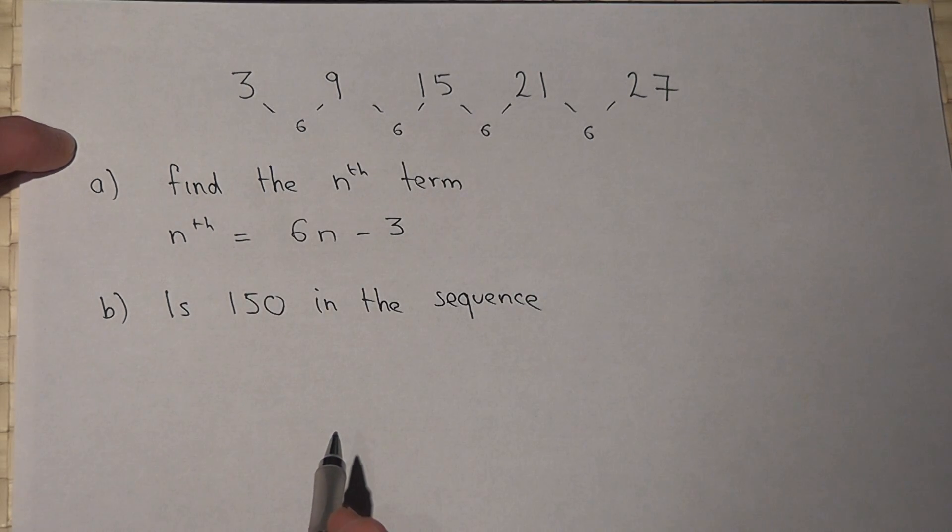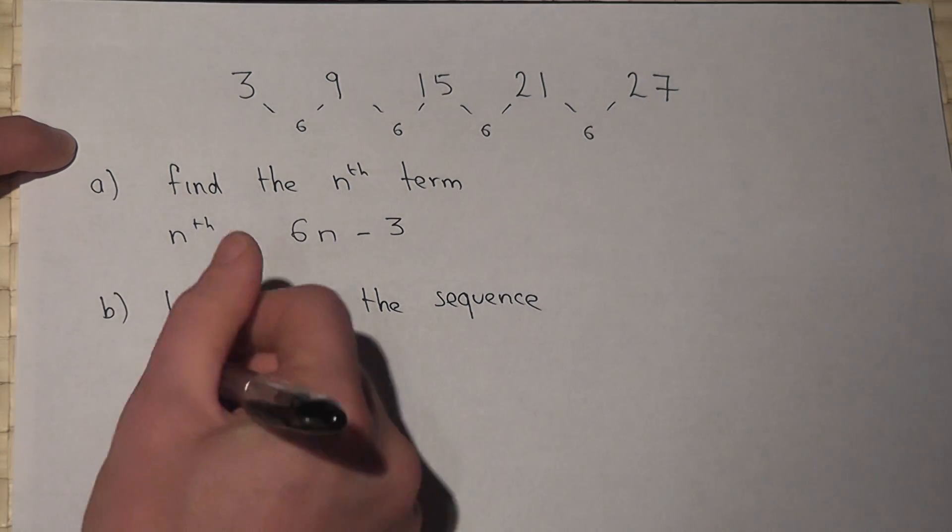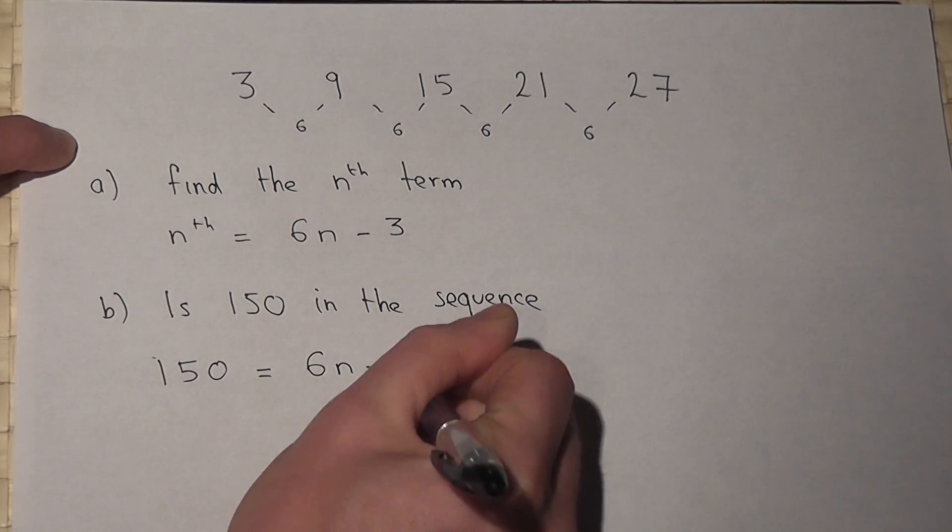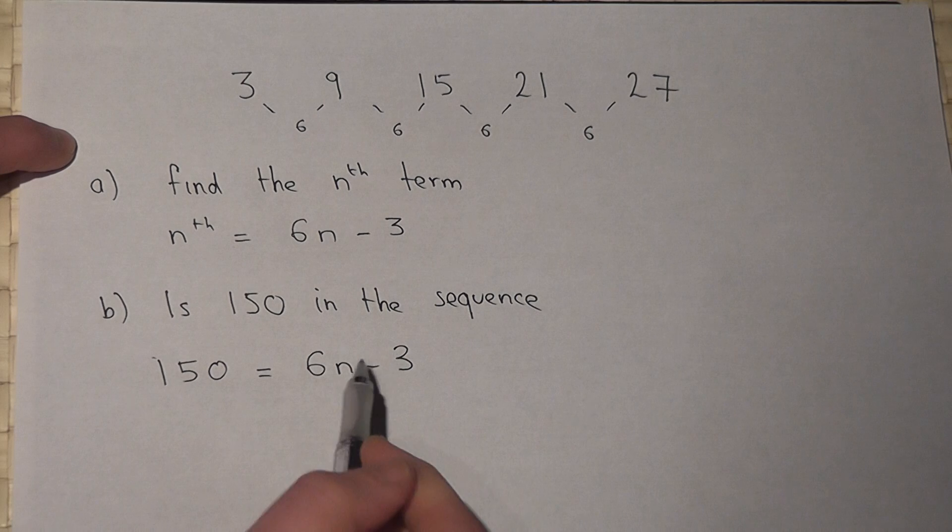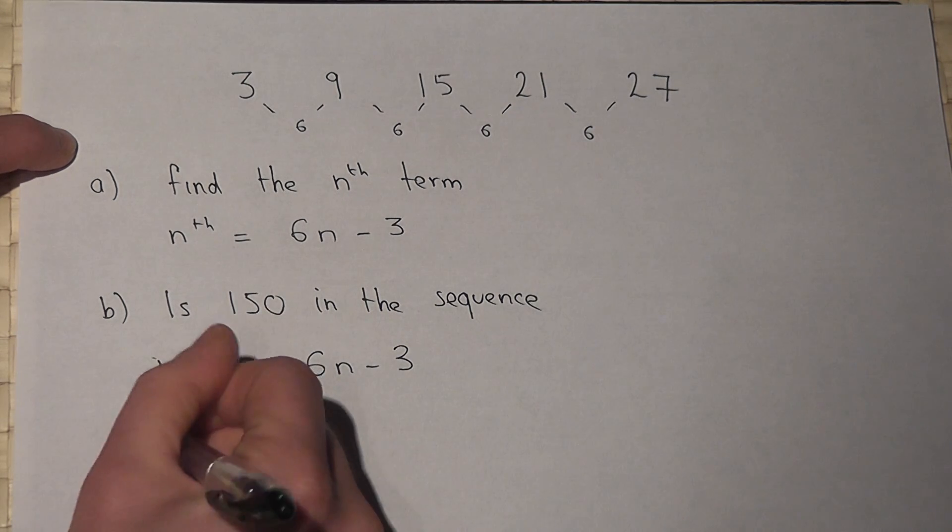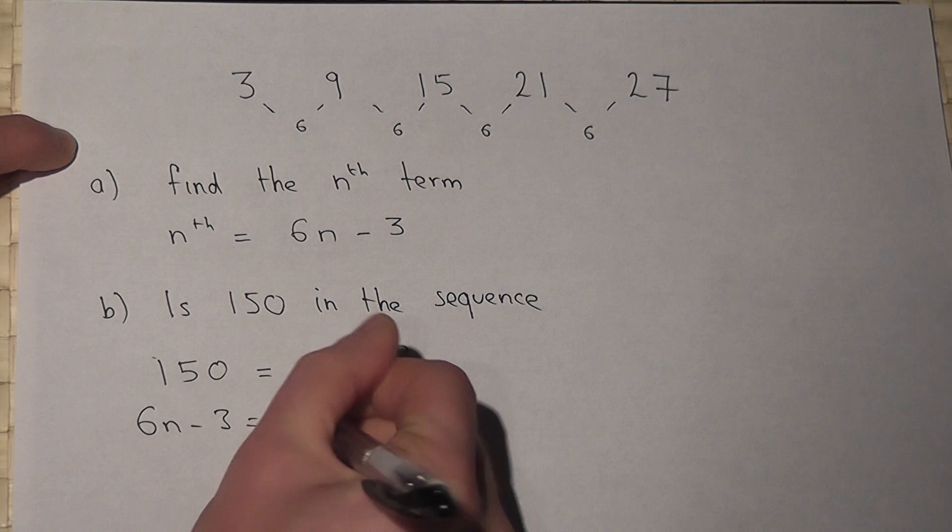Now the best way to show whether it is or it's not is to try to solve the equation 150 equals 6n take away 3. So is there a value of n which gives 150 as an answer? Okay, so 6n take 3 is 150.